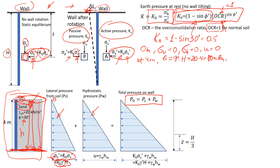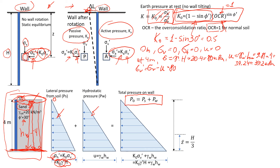The groundwater pore pressure is the unit weight of water times the height of water: 9.81 times 4 meters = 39.24 kPa, which I'll round to 39.2 kPa. The effective vertical stress is total stress minus pore pressure: 80 − 39.2 = 40.8 kPa.